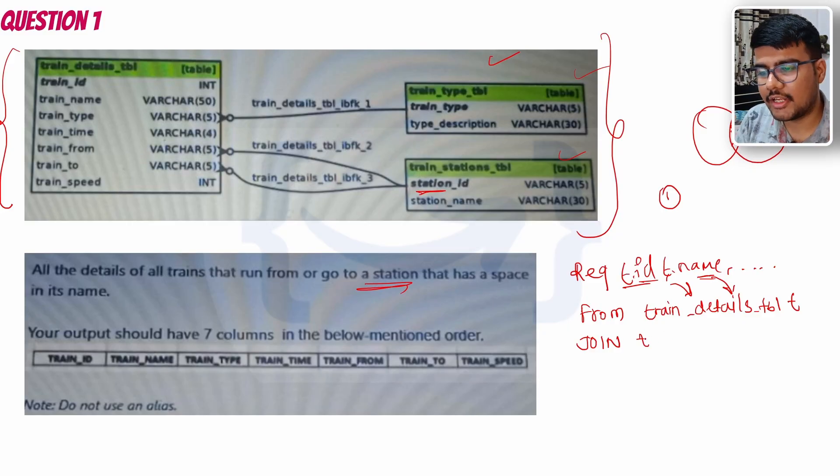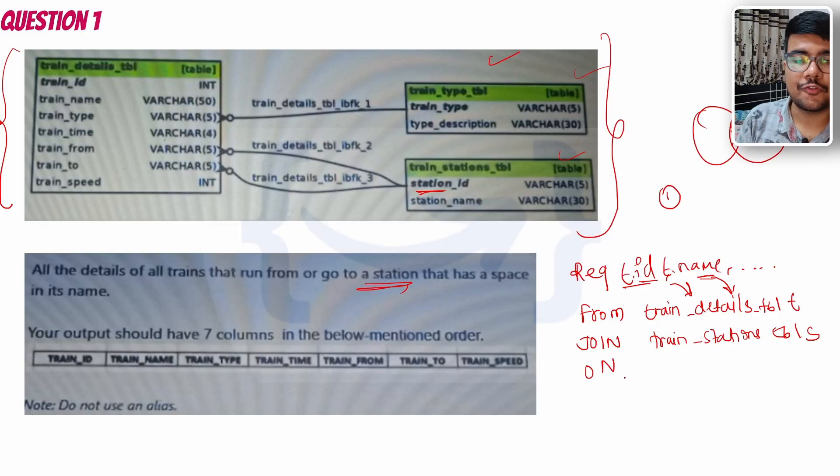I can just simply write - whether it's t.train_from or t.train - not train, it should be station. You need to specify the another table as well, isn't it? So it would be train_stations_tbl and just mark it as 's'.